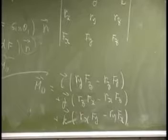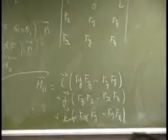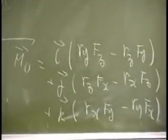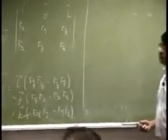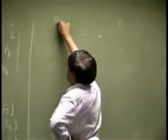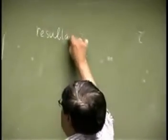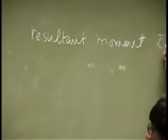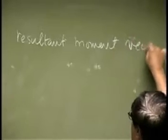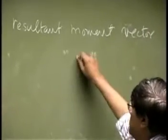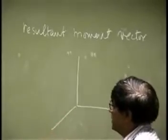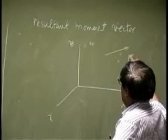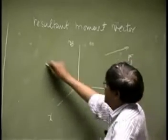That's the actual vector, provided you're given the components for the position vector as well as the force vector. Now since the moment is a vector, we could do the exact same thing we did for the force. That means we could find a resultant moment vector.